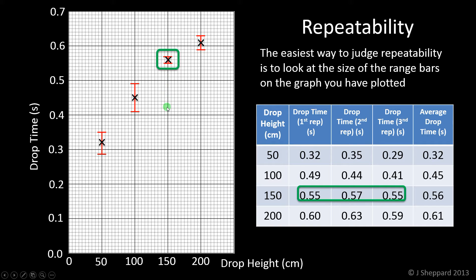You don't necessarily need to look at the table. You can comment on repeatability by looking at the size of your range bars if they are plotted correctly. Similarly, the measurement with fairly low repeatability has a much larger range bar. It's difficult to judge what constitutes a large range bar versus small, but you can see by looking at the graph.